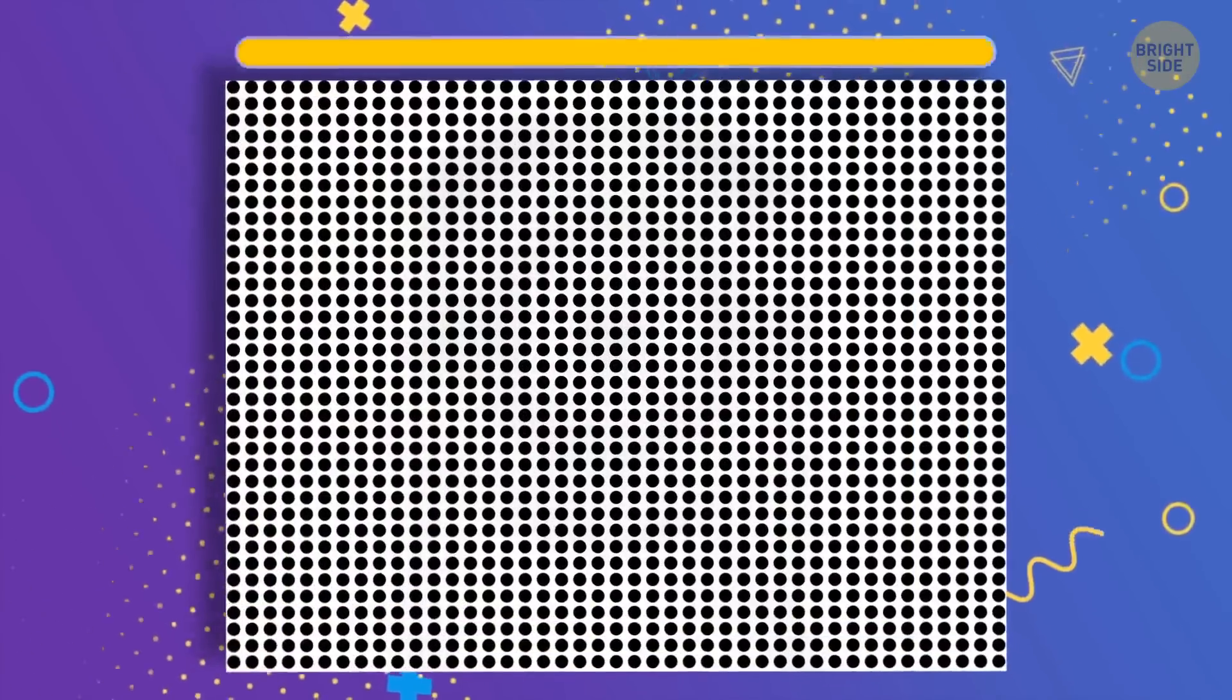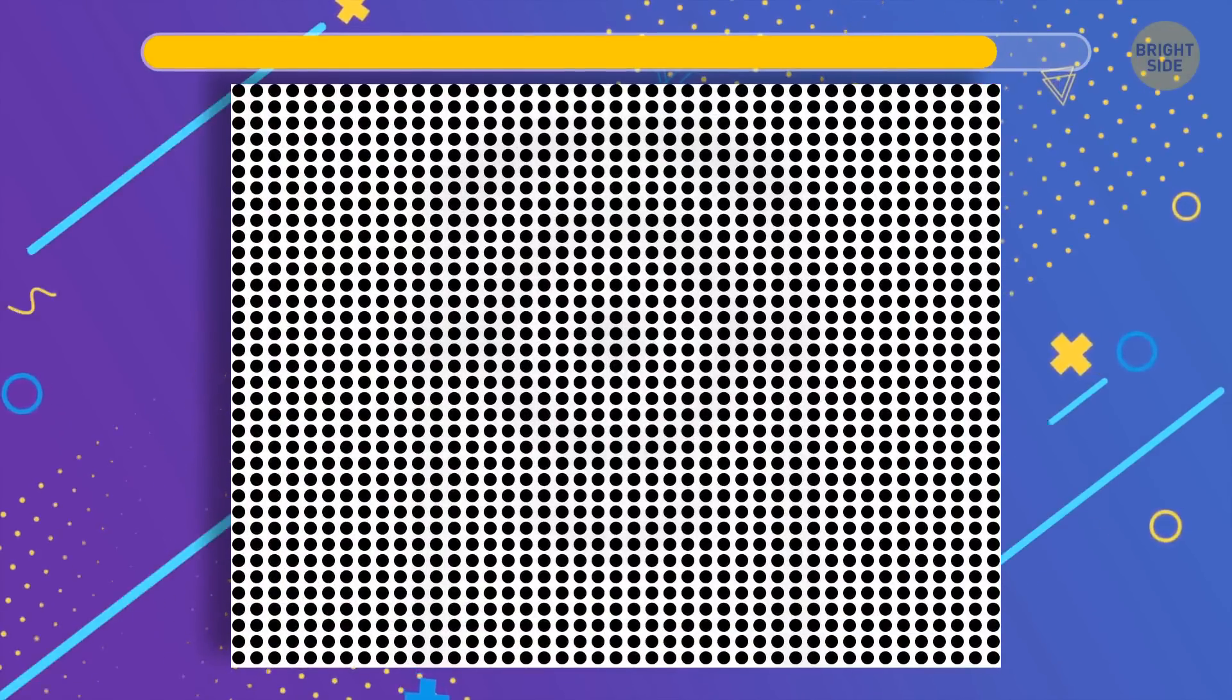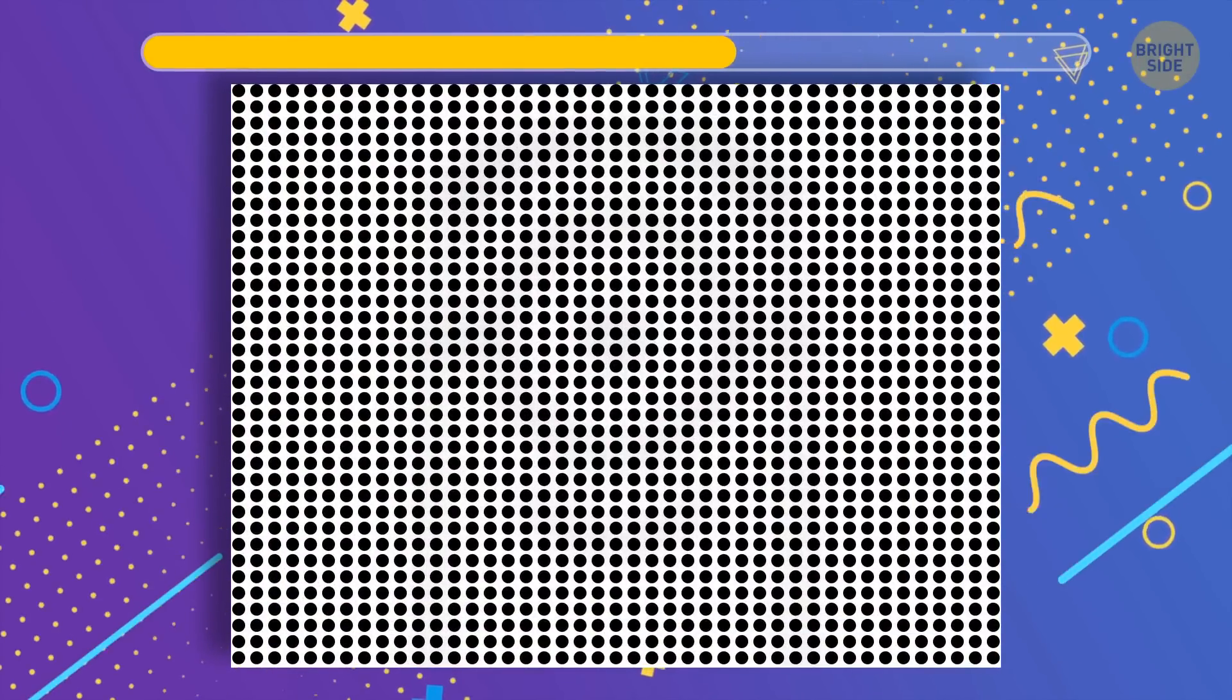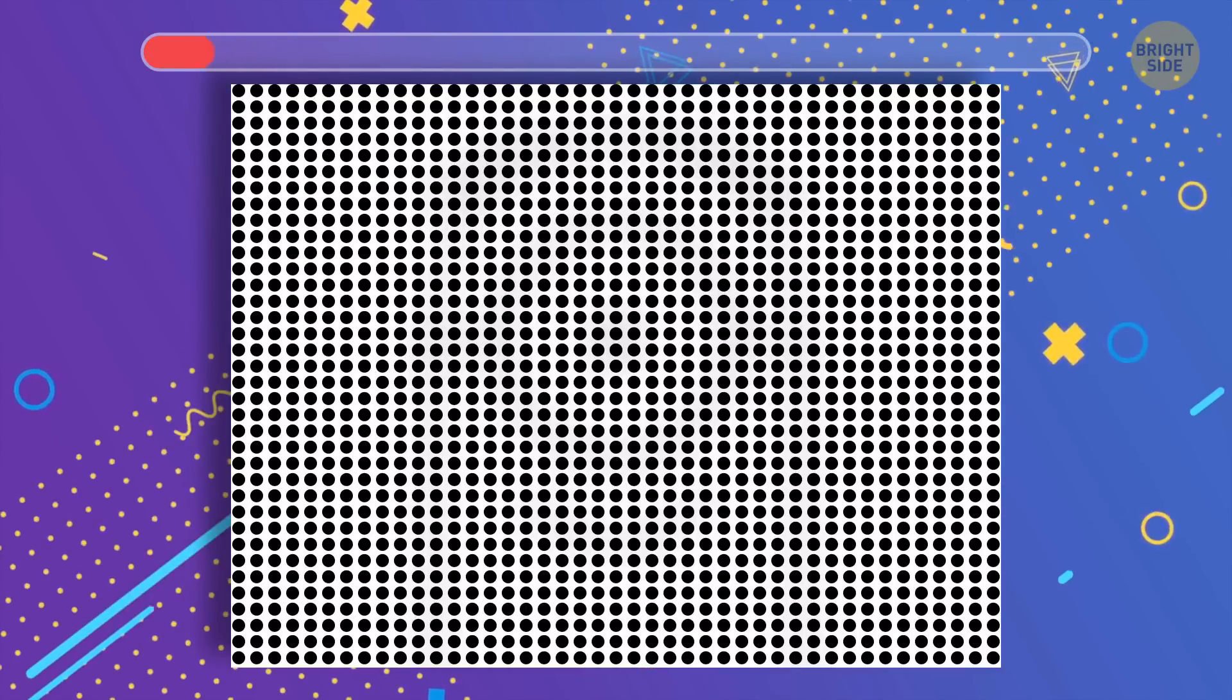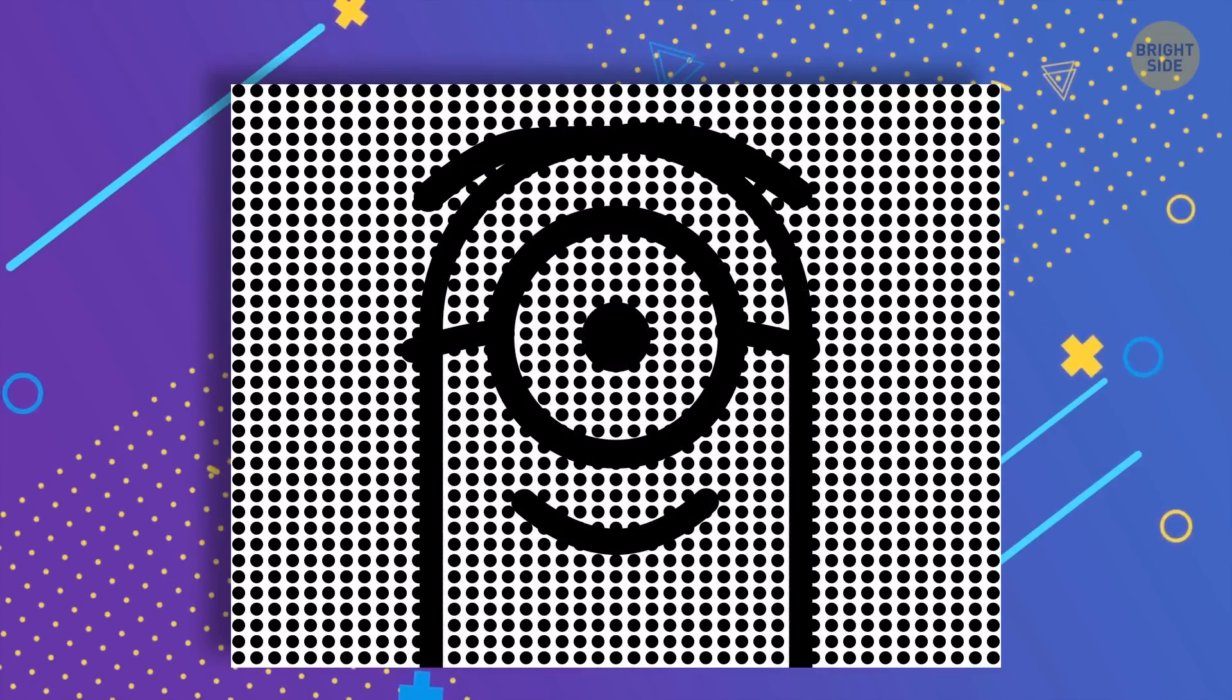Let's start easy. Behind all of these little black dots, there's an image. Are you part of the 1% of people that can see it? It's a minion. Congrats if you spotted that.